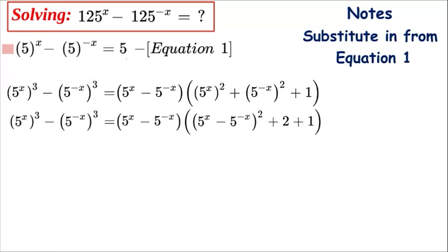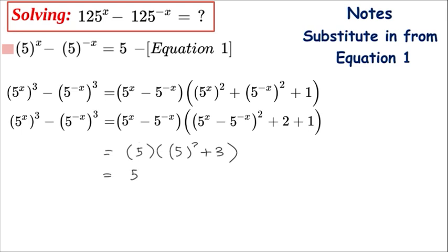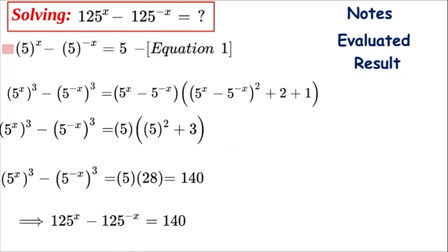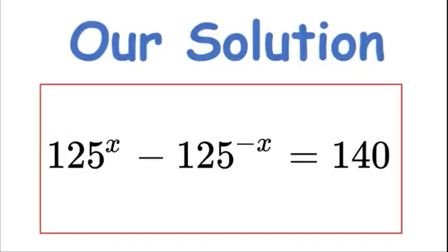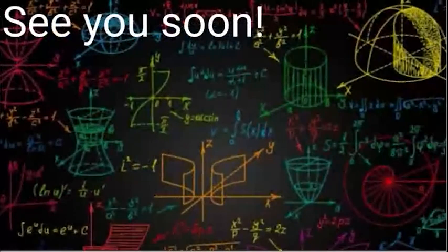We can now bring the 5 from equation one down here and combine everything. From equation one we have 5, and (5^x)^2 plus (5^(−x))^2 gives 5² which is 25, plus 3, so that's 5 times 28, which equals 140. Thus our solution is: 125^x minus 125^(−x) equals 140. I hope you enjoyed this solution — thanks for watching and see you again soon!